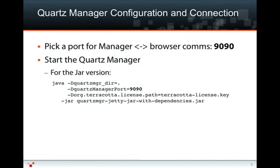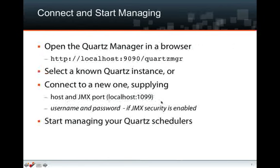Next, you need to configure Quartz Manager so that you can talk to it. You need to pick a port for the HTTP communications — here I'm picking 9090. Then you start the Java process, telling it where to put its logs and find its config, what port, where to find the license key, and so on. Then you connect to it in your browser with the host and HTTP port. You then select a known Quartz instance, specifying the host and the JMX port of that Quartz instance, and then you start managing your Quartz schedulers.